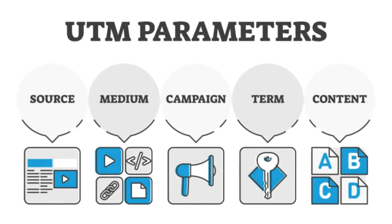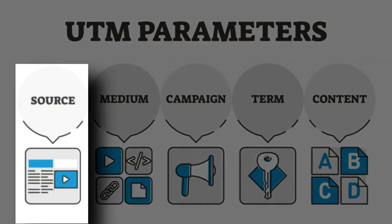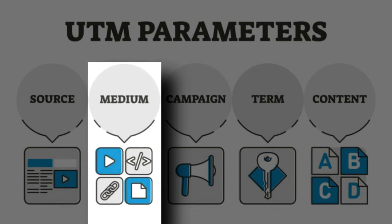There are five tags in UTM codes — the last two are optional. The source code tag shows you the source where your visitors are coming from, like Google, Facebook, Twitter, or your email marketing provider. The medium tag is used to identify the medium of your traffic, like email, social media, or ads.